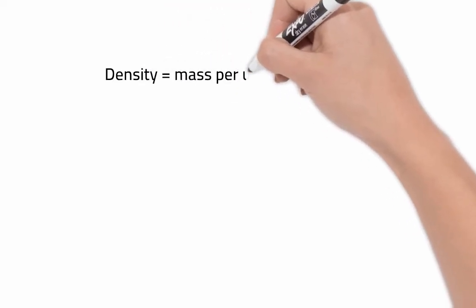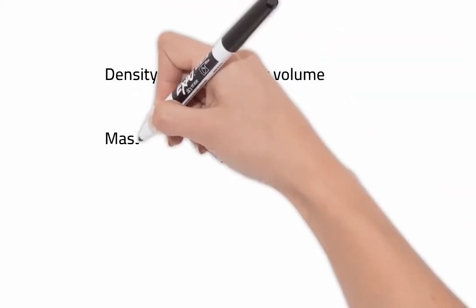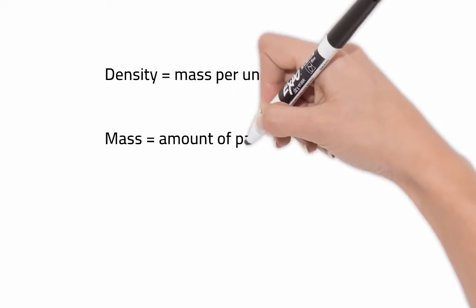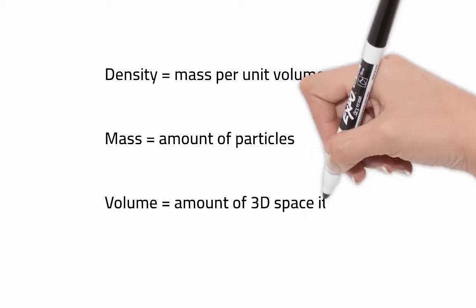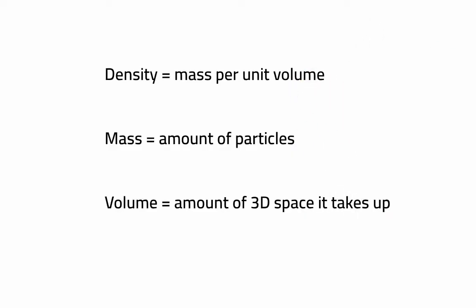The word density describes the amount of mass within a given volume. Mass is referring to the number of particles an object is made up of, and we refer to volume as the amount of 3D space that something takes up.